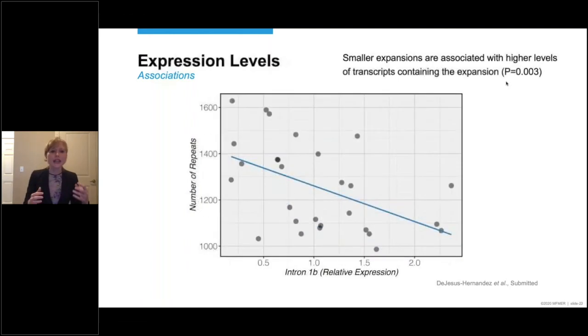We then extended our analysis and looked at expression levels. And in this correlation plot on the y-axis, you see the number of repeats. And on the x-axis, the expression levels of one particular transcript, transcript containing intron 1b. And I don't know how familiar you are with C9ORF72 transcripts, but there are basically three well-known transcripts, transcript variants 1, 2, and 3.